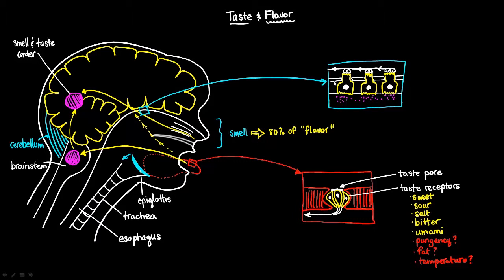So he also couldn't distinguish between the flavors of raspberry and strawberry, although he could still tell because his taste receptors on his tongue were still intact. He could still tell sweet, salty, and sour, and those basic tastes.